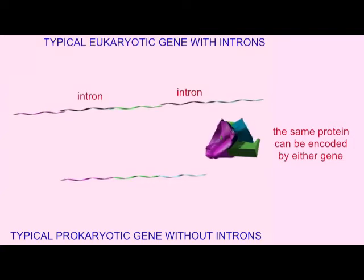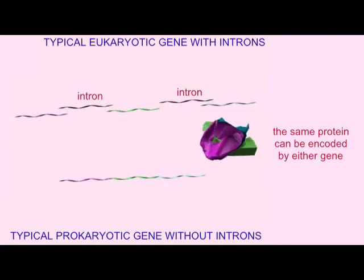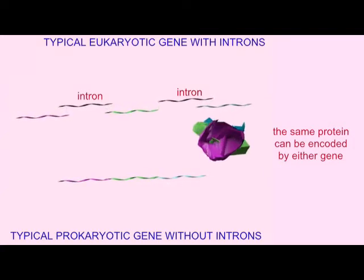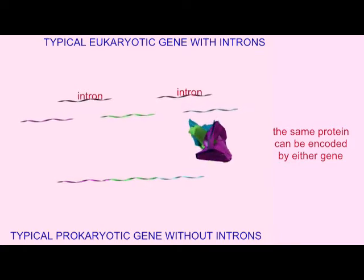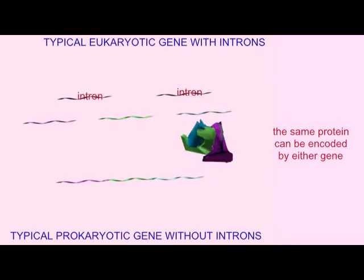In prokaryotes, a protein which possesses three separate regions is encoded by one single gene.